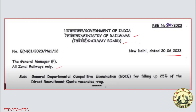What is the difference between the GDC and the ECC? The ECC is the General Department of Competitive Examination. For filling up 25% of the ECC, the ECC is the direct requirement.